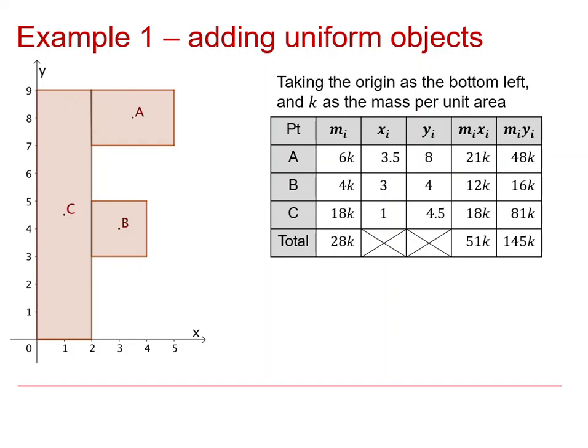So there are the figures, just verify quickly, say for C. C is 2 by 9, so hence 18K. Its centre of mass is halfway across, so it will have x coordinate 1, and it's halfway up, so it will have y coordinate 4.5. And then as usual, 18K times 1 is 18K, and 18K times 4.5, 4 eighteens are 72, and another 9 is 81K.